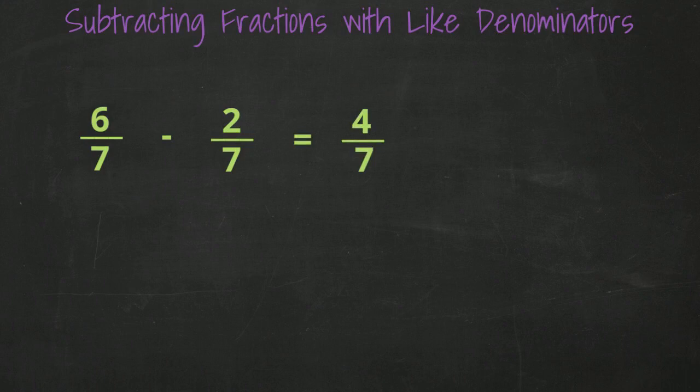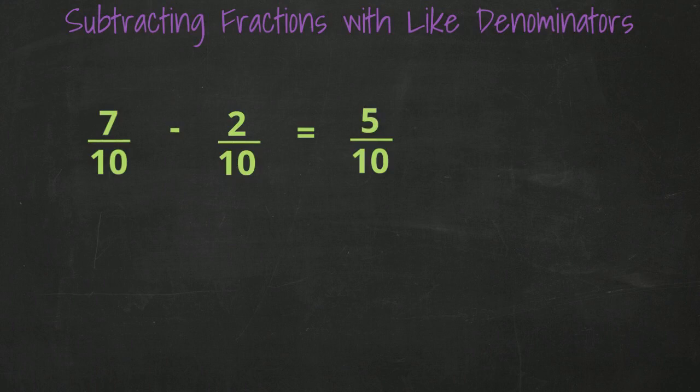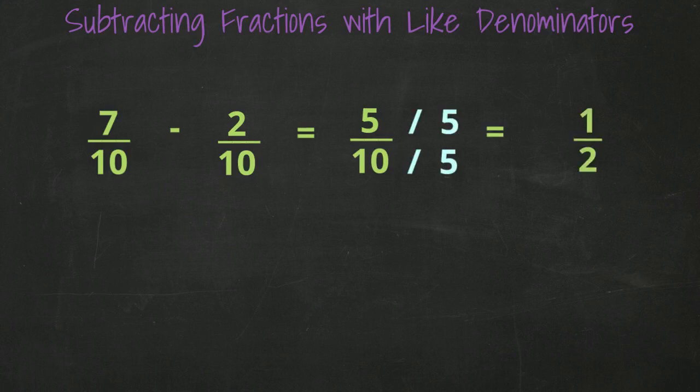One last example. 7 tenths minus 2 tenths. We keep the denominator of tenths the same. We subtract 7 minus 2, and we get 5. 5 tenths. But if you notice, 5 can go into 10, so we need to simplify further. If we divide the numerator and denominator by 5, we get a simplified fraction of 1 half. So 7 tenths minus 2 tenths is actually equal to 1 half.